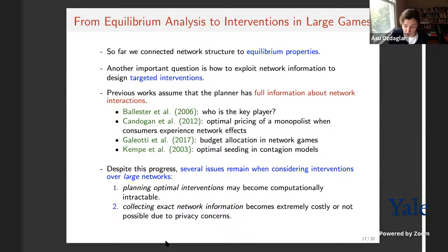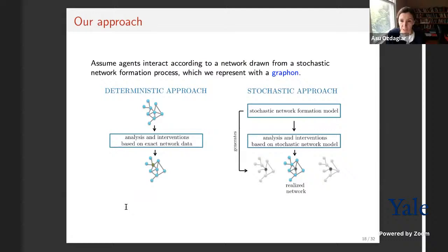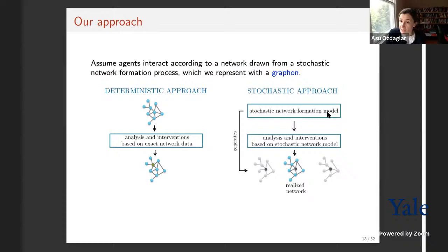This motivates our graphon games approach. Instead of the deterministic approach — taking a fixed network G and analyzing equilibrium — we assume a stochastic network formation process and sample realized networks from it. We define a game over each realized network. The central planner does not know this realized network but only the network formation model generating these networks, which we represent using a graphon.